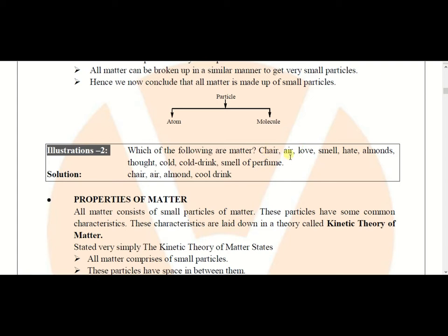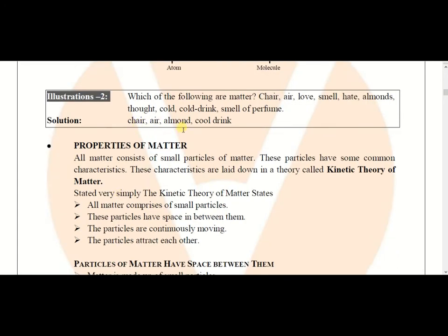Love is not matter because it is just a feeling — it does not have any mass or volume. Smell is also just a feeling, so it does not have mass or volume and is not matter. Hate is just a feeling, so it is not matter. Almond has both mass and volume, so it is matter. Thought is just a feeling of our brain, so it is not matter. Cold is also a feeling, so it is not matter. Cold drink has mass and volume, so it is matter. Smell of perfume is also a feeling, so it is not matter. The solution is: chair, air, almond, and cold drink are the matter.